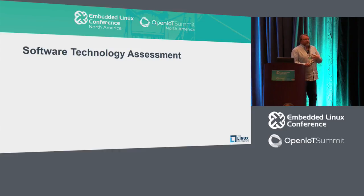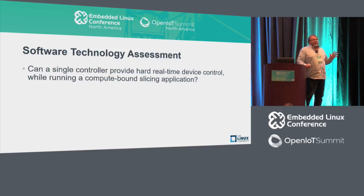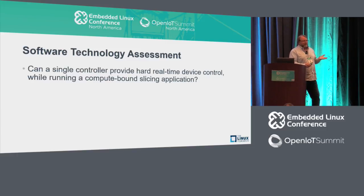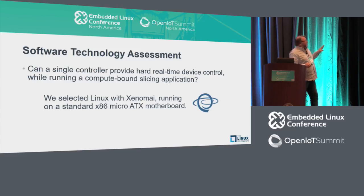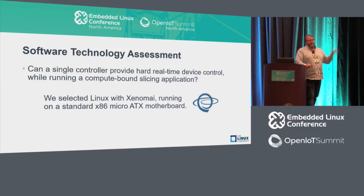For my project — this technology assessment, not any particular product yet, but just to see if it's possible — the question is: can we run this hard real-time controller on the same controller that's doing the compute-bound slicing? That's a fairly big challenge, and we chose Linux with Xenomai — specifically the co-kernel version, cobalt — because it provides hard real-time capability even on a heavily loaded system. Some print jobs might take 30 hours, and if you miss a deadline 29 hours in, that's not going to make the customer happy. We absolutely need hard real-time response.